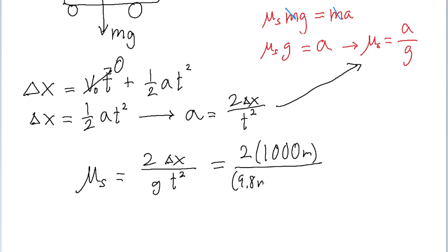And then it's divided by g, so 9.8 meters per second squared, multiplied by the square of time, which is 12 seconds.